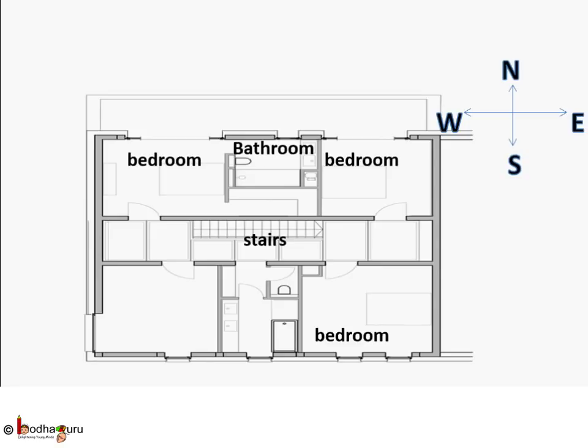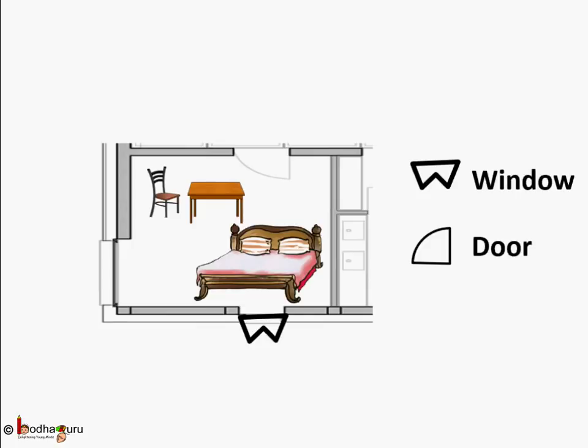These maps are called floor maps. We use symbols to denote things in a map because there is very little space. We show big rooms and big areas on a small paper, so we use symbols.